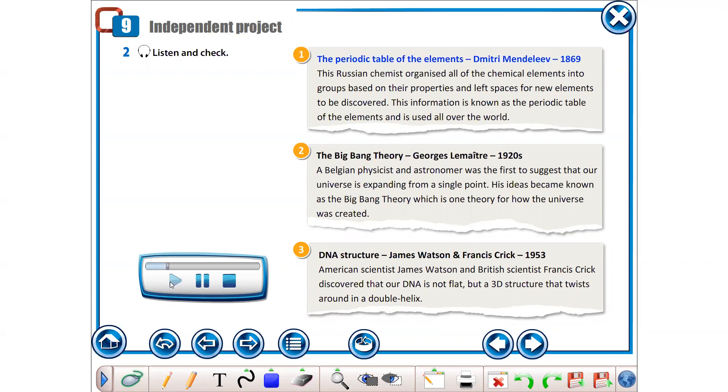The periodic table of the elements. Dmitry Mendeleev, 1869. This Russian chemist organized all of the chemical elements into groups based on their properties and left spaces for new elements to be discovered. This information is known as the periodic table of the elements and is used all over the world.